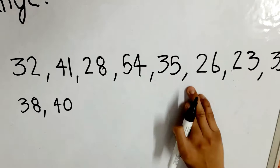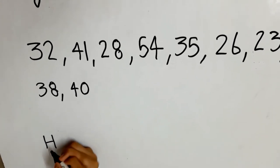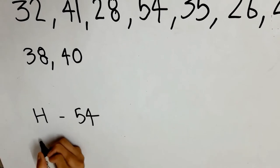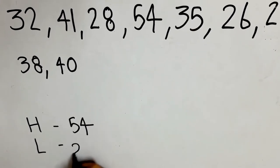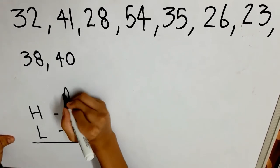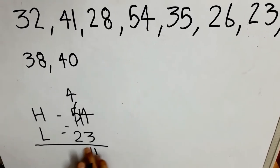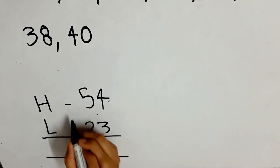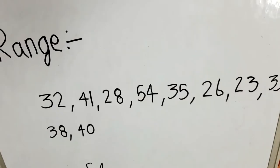From the given numbers, the highest number H is 54, and the lowest number L is 23. Now what you have to do is just subtract the numbers to get the range.